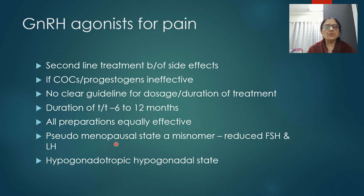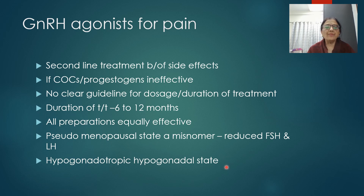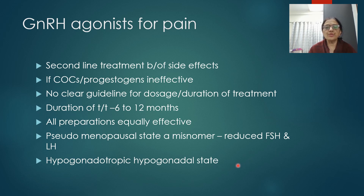It is called a 'pseudo-menopausal state' but this is a misnomer. In true menopause, ovarian estrogen falls but gonadotrophins (especially FSH) rise. With GnRH agonist treatment, FSH and LH are reduced — it actually creates a hypogonadotrophic hypogonadal state, with reduced pituitary gonadotrophins and reduced ovarian estrogen, progesterone, and androgen.